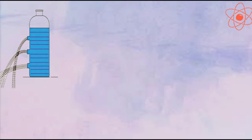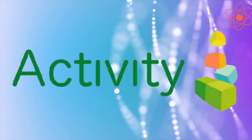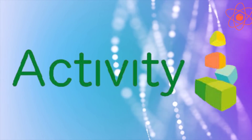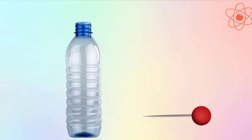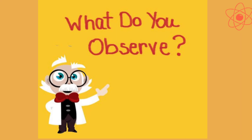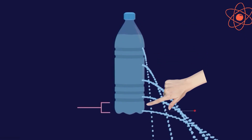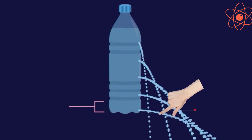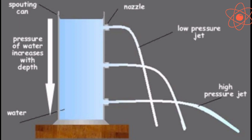Fourth characteristic: the pressure exerted by a liquid increases with depth. Let us understand this with the help of an activity. Take an empty plastic bottle and make some holes along its side at different heights from the base. Now pour water into the bottle. We can see the jet coming out from the top hole falls very close to the bottle, whereas the jet coming out from the bottom hole falls far away from the bottle. This shows that liquid pressure increases with increasing depth.